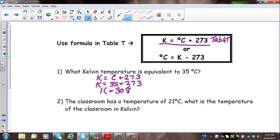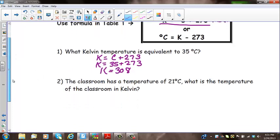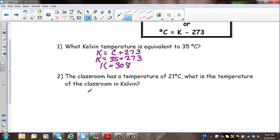Let's take a look at the next problem. The classroom is a temperature of 21 degrees Celsius. What is the temperature of the classroom in Kelvin? Again, I'm just going to start with my generic formula. K equals C plus 273. And K equals 21 plus 273. So K equals 294. Easy stuff, right?